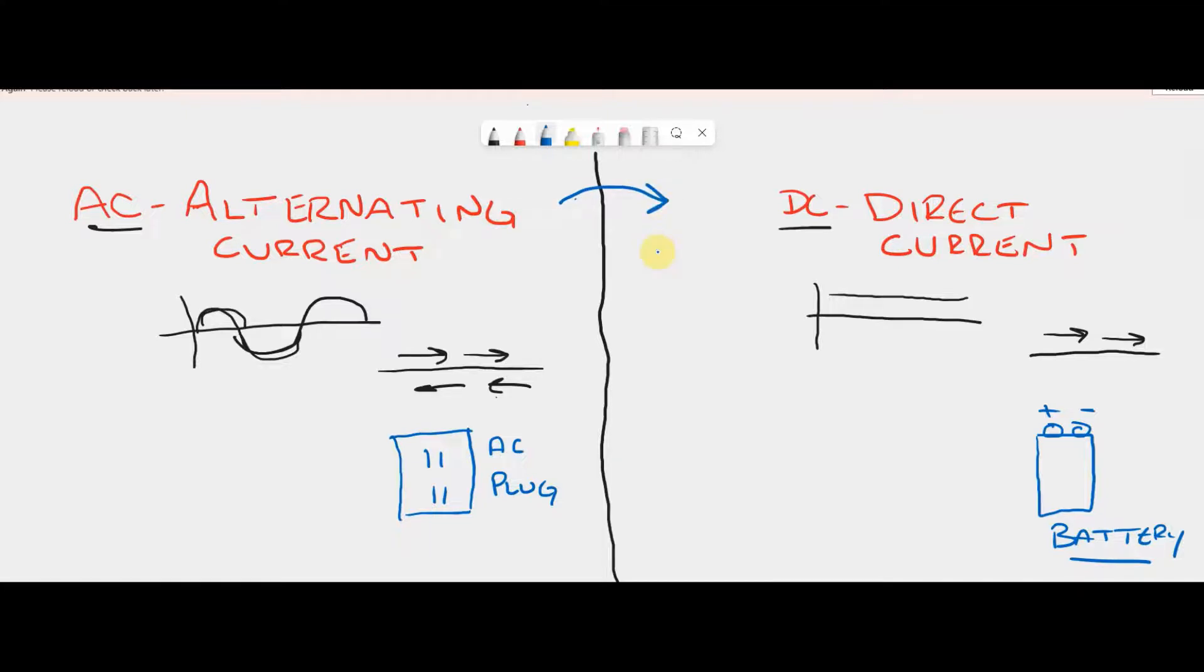So, you can go AC to DC, or you can go DC to AC. AC to DC, DC to AC. We do that through a converter.